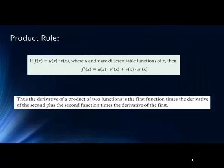What we're going to be doing today is looking at two shortcuts: one for a function that is a product, and one for a function that is a quotient, and we'll look at each of those individually. The first part is the product rule, and this is a shortcut when you have a function, f of x, which is actually made up of a product of two other functions, u of x and v of x.